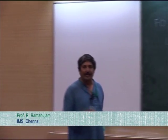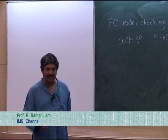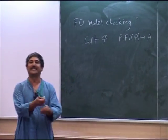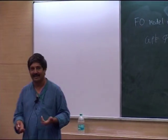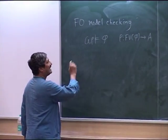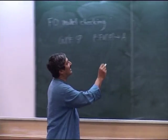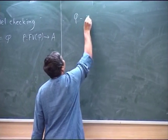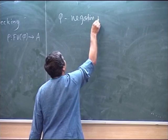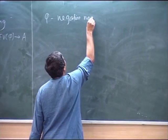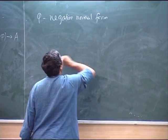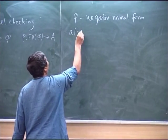This is just an evaluation problem: you are given the formula and given an assignment to the free variables, and you just have to find out whether it is true or false. A simple way to do this is to first push all the negations inside, and then you have an alternating algorithm.